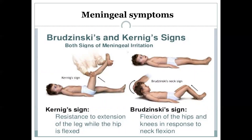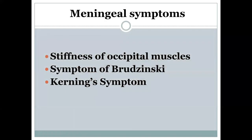Kernig's sign is resistance to extension of the leg while the hip is fixed and flexed. Brudzinski's sign is flexion of the hips and knee in response to neck flexion. The most common meningeal symptoms are Brudzinski's sign, Kernig's sign, and stiffness of the occipital muscles.